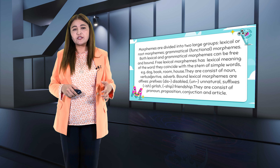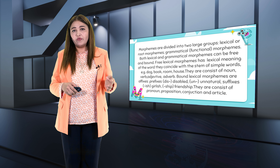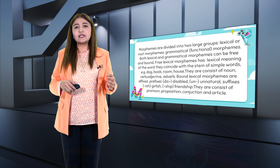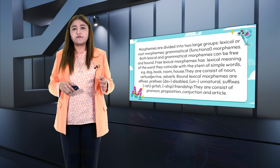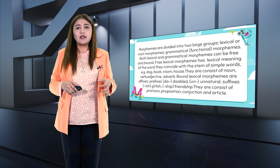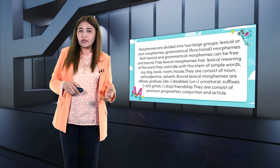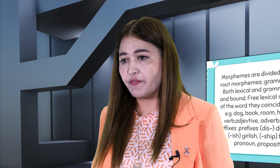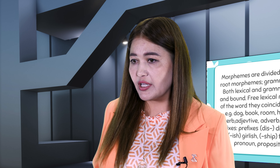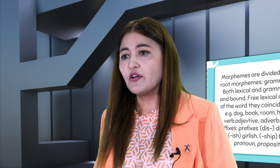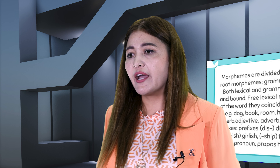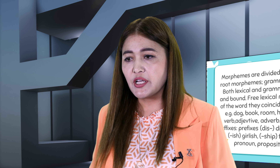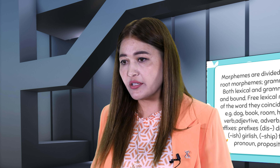Free lexical morphemes consist of nouns, verbs, adjectives, and adverbs. Bound lexical morphemes are suffixes and prefixes — such as dis- (disable), un- (unnatural), and suffixes like -ish (girlish) and -ship (friendship). Grammatical morphemes consist of pronouns, prepositions, conjunctions, and articles.